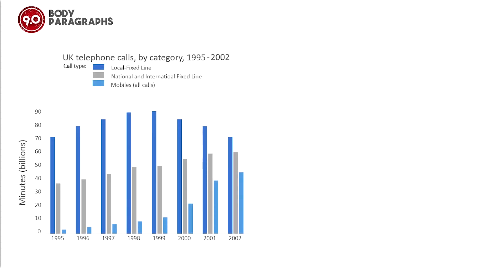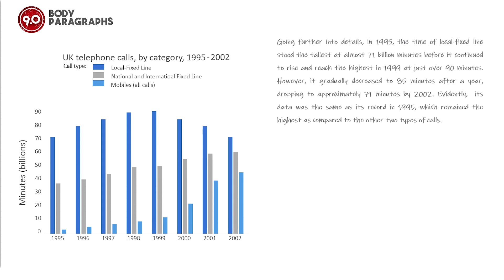On the contrary, this is the sample body paragraph with a band score of 9.0: 'Going further into details, in 1995 the time of local fixed line stood the tallest at almost 71 billion minutes, before it continued to rise and reach the highest in 1999 at just over 90 minutes. However, it gradually decreased to 85 minutes after a year, dropping to approximately 71 minutes by 2002. Evidently, its data was the same as its record in 1995, which remained the highest as compared to the other two types of calls.'